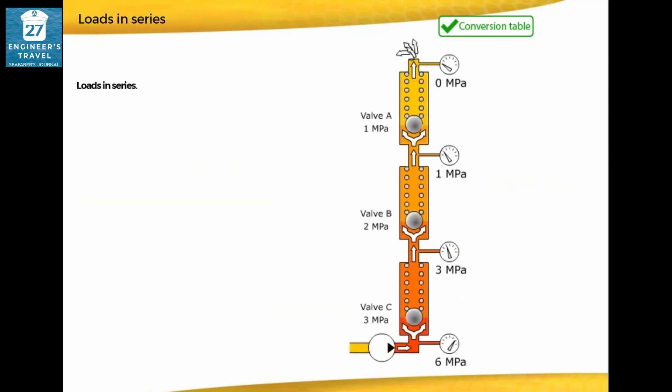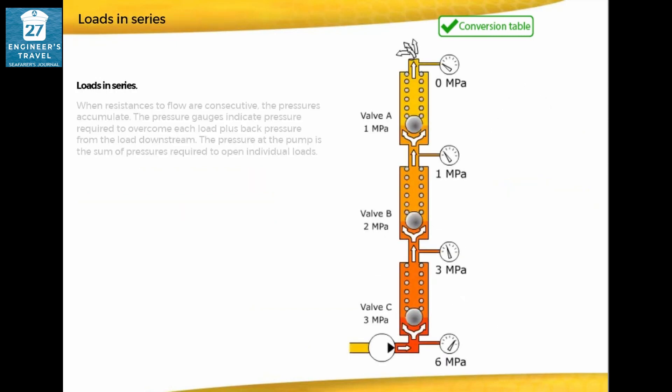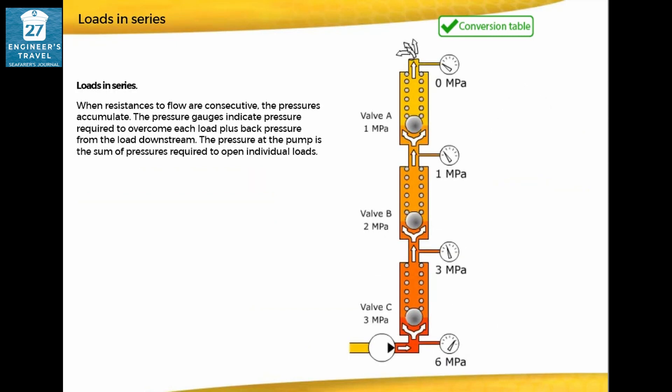Loads in series: when resistances to flow are consecutive, the pressures accumulate. The pressure gauges indicate pressure required to overcome each load, plus back pressure from the load downstream. The pressure at the pump is the sum of pressures required to open individual loads.